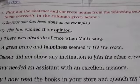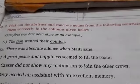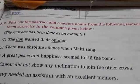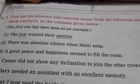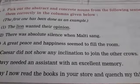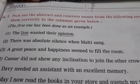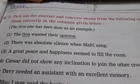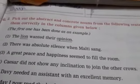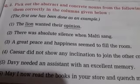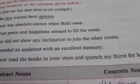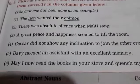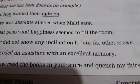Next question: pick out the abstract noun and concrete noun from the following sentences and rewrite them correctly in the columns given below. Make abstract noun and concrete noun columns. Sentences: the lion wanted their opinion. There was absolute silence when Malti sang — a great peace and happiness seemed to fill the room. Kesar did not show any inclination to join the other crows. Davy needed an assistant with an excellent memory. May I now read the books in your store and quench my thirst for knowledge? Make out which words are abstract nouns and which are concrete nouns and write them in the columns accordingly.